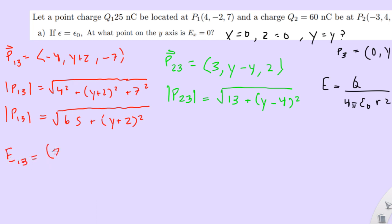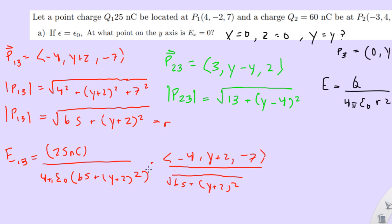E13 equals 25 nanocoulombs over 4π epsilon naught times this whole thing squared. We're going to be multiplying by this because this is effectively R, right? So, since this is going to be squared, we could basically just take off this square root because a square and a square root are going to cancel each other. And then, we get to multiply it by the unit vector. So, what is that? Negative 4, (y + 2), negative 7 over the R. And you see that these two can combine.